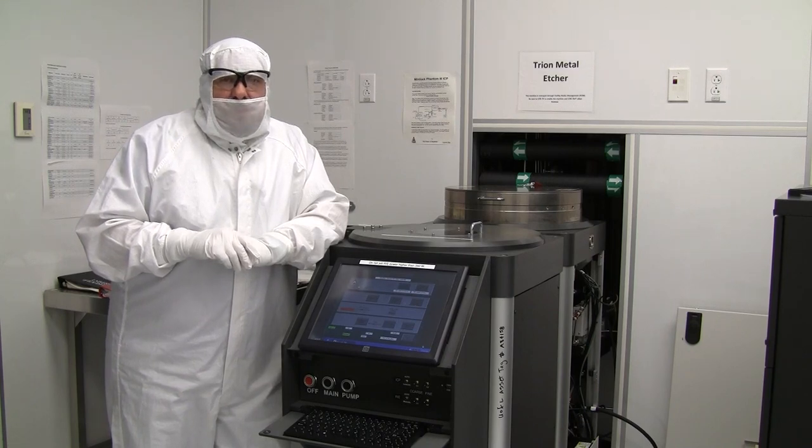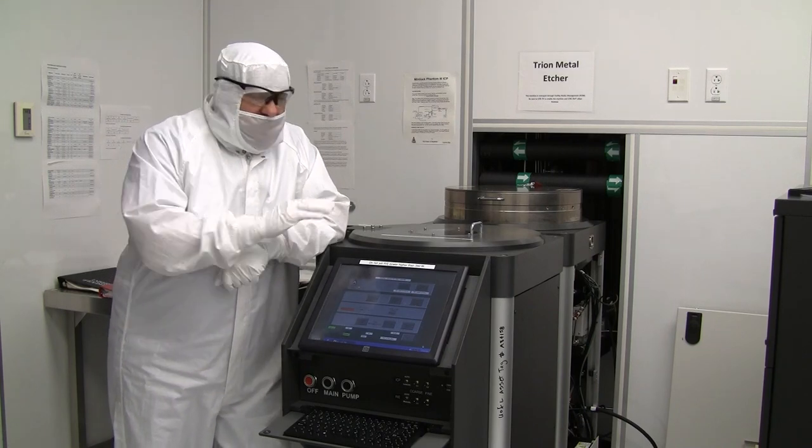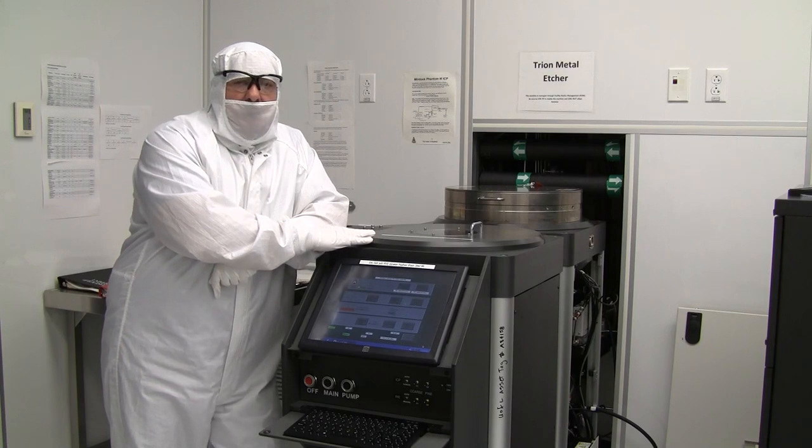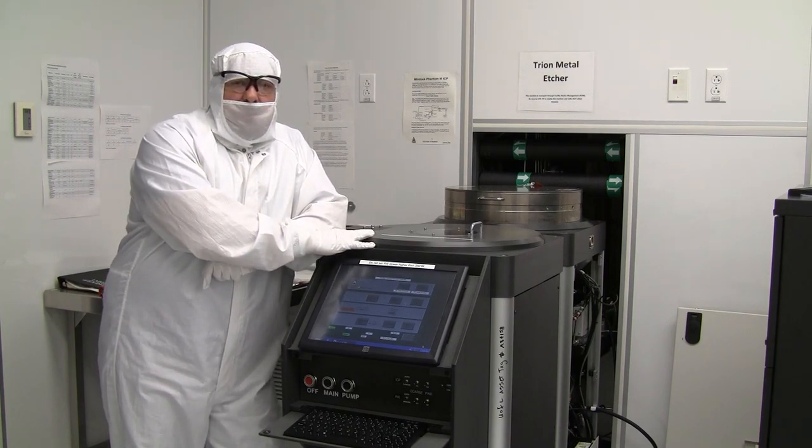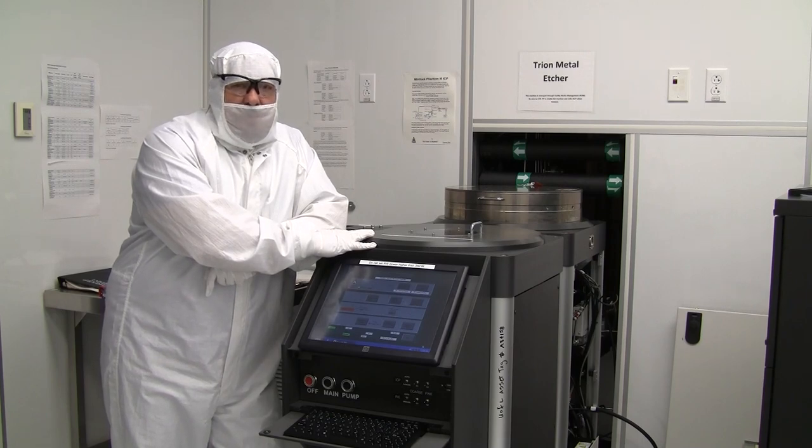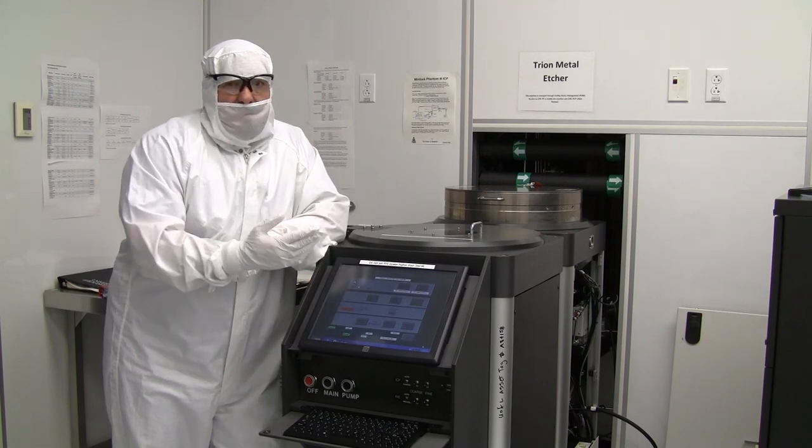So first tool we're going to talk about. This is a Trion, we call it a metal etcher. It is a plasma reactor that is designed to etch all sorts of materials, including metals.